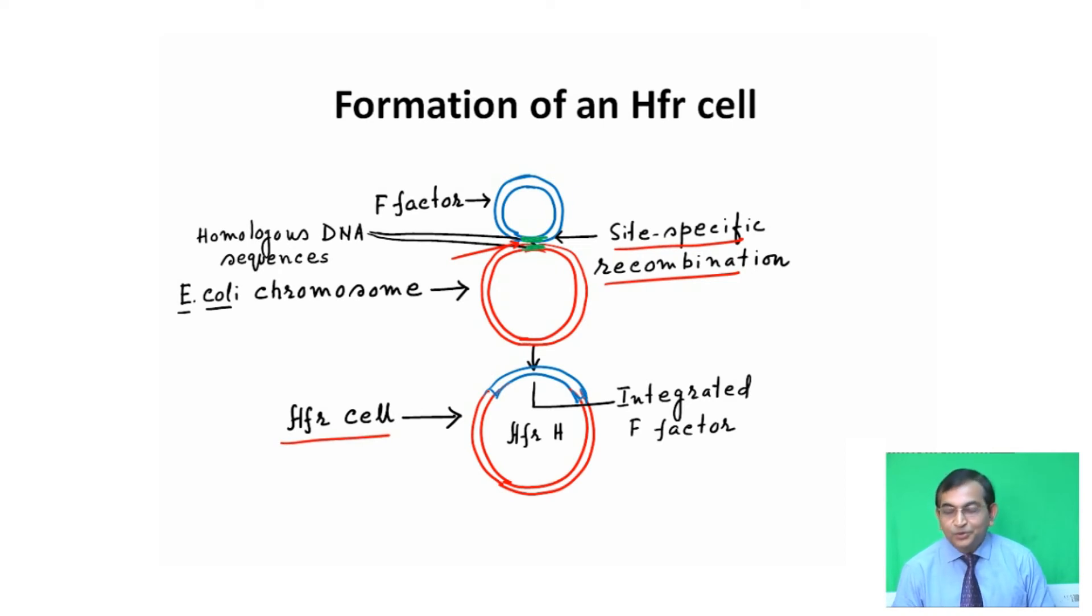The HFR cell is able to transfer the host chromosome from donor to recipient cell. It is termed HFRH because it was first discovered by William Hayes, and is nomenclatured as high frequency recombination H.